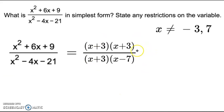Now simplifying this, you have x plus 3 and x plus 3. That reduces to 1. So we're left with x plus 3 over x minus 7 as my simplest form for that expression.